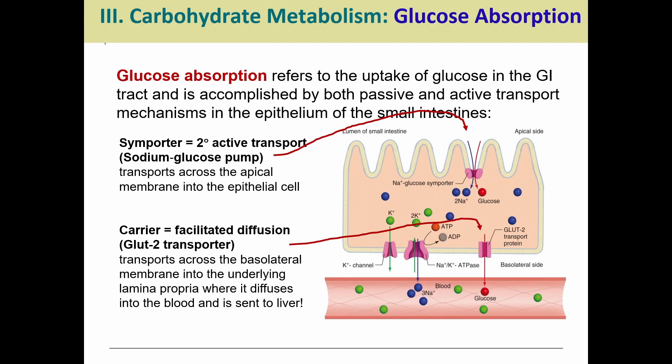So we have to use active transport to pull the glucose into the cells — and that's what I want you to remember more than anything. Using ATP, using active transport to pull glucose in from the food we eat into the small intestine cells. And then facilitated diffusion takes glucose from the small intestine cells to the bloodstream.